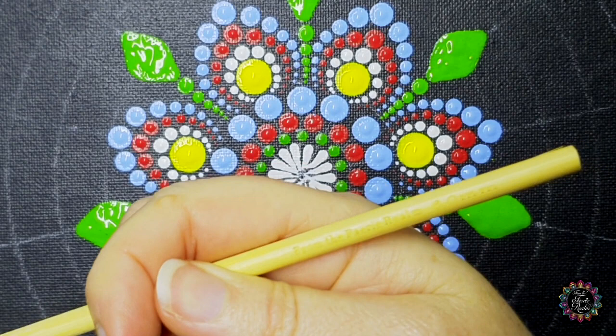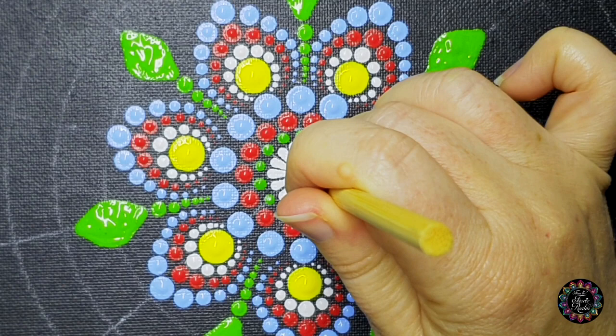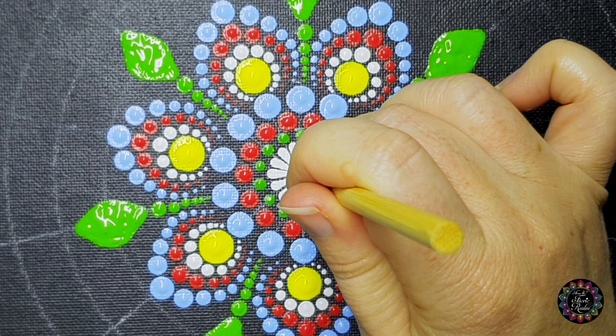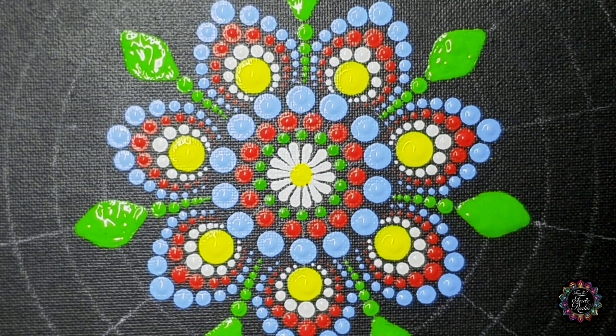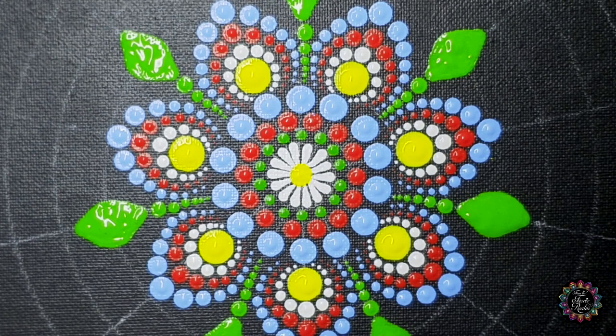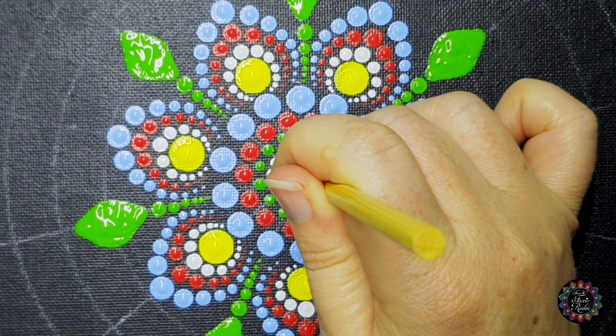I'm going to use my six millimeter tool and I'm going to make a yellow dot in the center to make my little daisy. As you can see this paint of mine is pretty see-through, so I'm just going to give it an extra bit of paint on there so it won't see through. Like that.